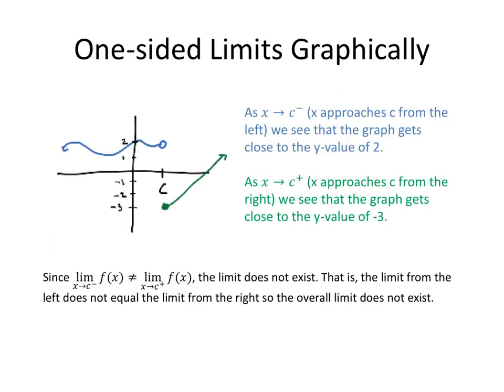So what does this mean graphically? Here in blue, just some function with an open circle. As X approaches C from the left, so here's C. From the left side I get closer and closer to C with my X values. We can see that the Y values get closer and closer to 2. Now as I approach C from the right side, so I'm coming closer and closer to C from the right, I see that the graph itself gets closer and closer to a Y value of negative 3.